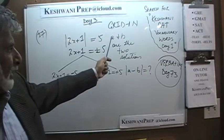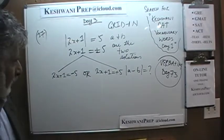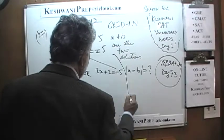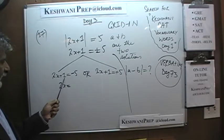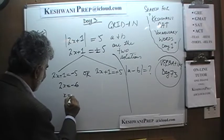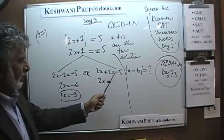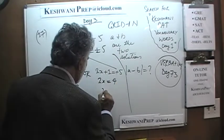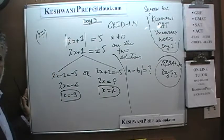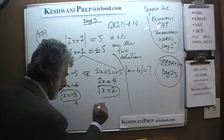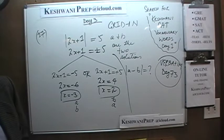For 2x plus 1 equals negative 5: subtracting 1 from both sides gives 2x equals negative 6, so x equals negative 3. For 2x plus 1 equals positive 5: 2x equals 4, so x equals positive 2. The two solutions are negative 3 and 2. It doesn't matter which you call a and which you call b, because they are asking for the absolute value.